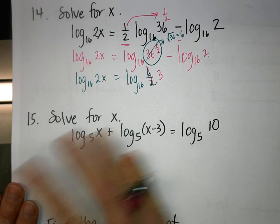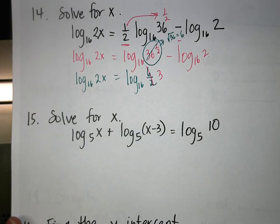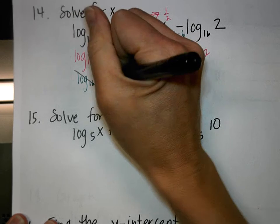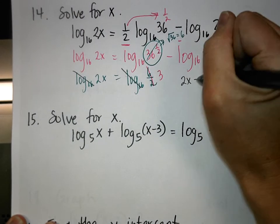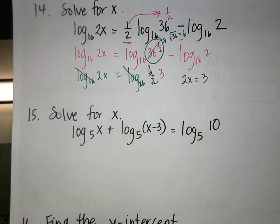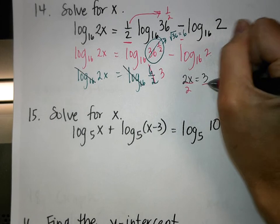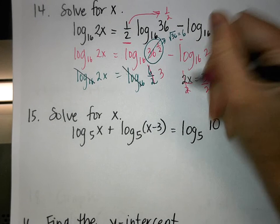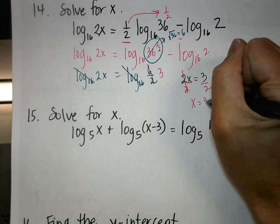Since we have a single log on both sides with the same base, eliminate the logs. We get 2x equals 3, then divide both sides by 2, and X equals 3/2.